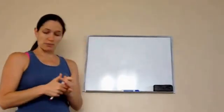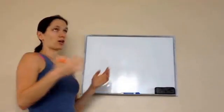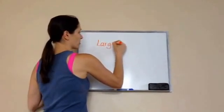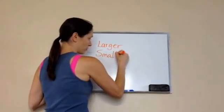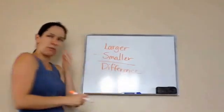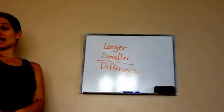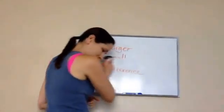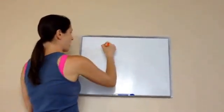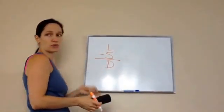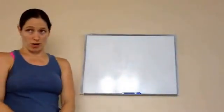Today we're going to do problems about comparing. When you're working with comparing, you take the larger amount minus the smaller amount and you get the difference. Some people like to say L for larger, S for smaller, and D equals difference — so L minus S equals D. That's how we set it up. Let's do one of these word problems.